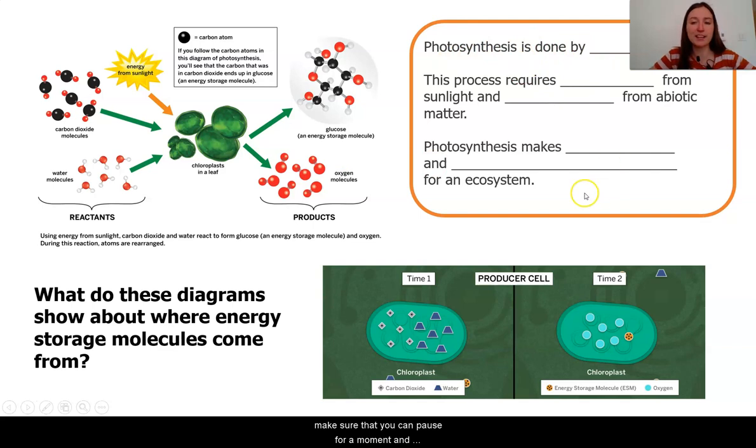Make sure that you pause for a moment and think about what is a summary of what we have figured out. Photosynthesis is done by producers. This process requires energy from sunlight and carbon dioxide from abiotic matter. Photosynthesis makes glucose and oxygen for an ecosystem.